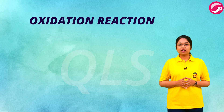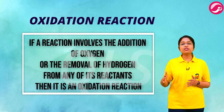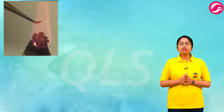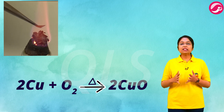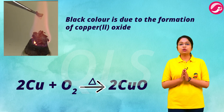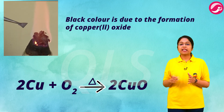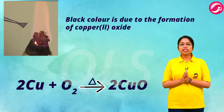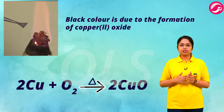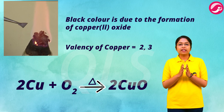If a reaction involves the addition of oxygen or the removal of hydrogen from any of its reactants, then it is an oxidation reaction. For example, when copper is heated in the presence of oxygen it becomes black. This black color is due to the formation of copper(II) oxide. The Roman numeral II means the valence of copper is 2.